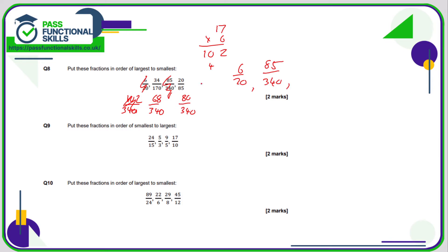Now we've got 68, 85, and 80 remaining. So the order continues: 85 over 340, then 80 over 340 (originally 20 over 85), and finally 34 over 170.